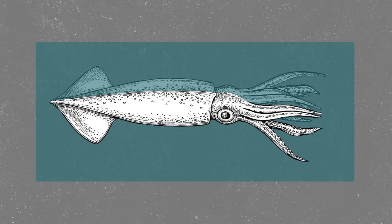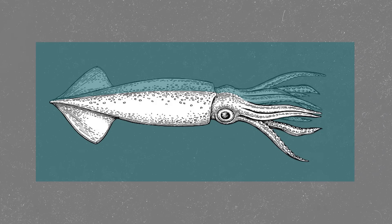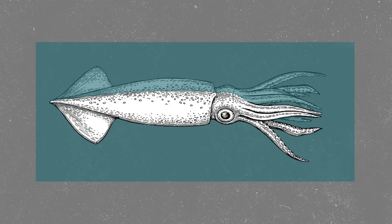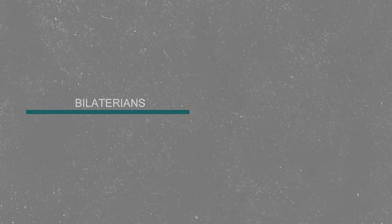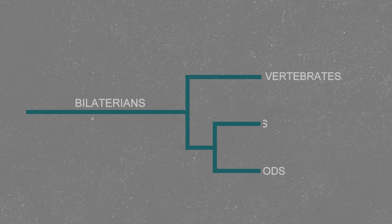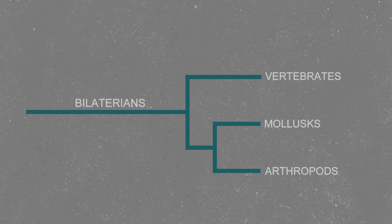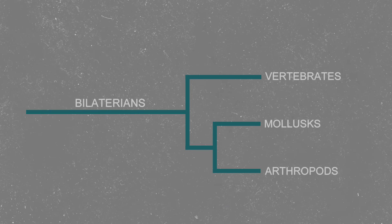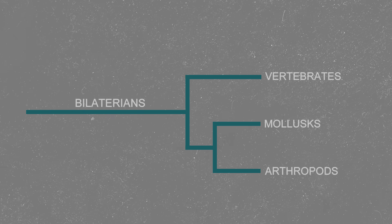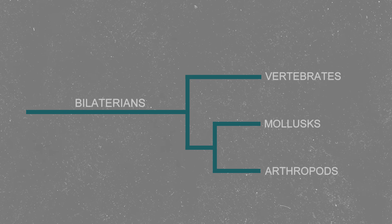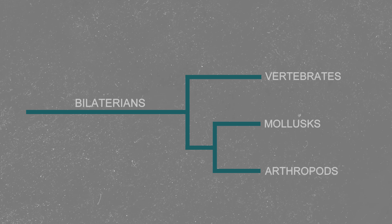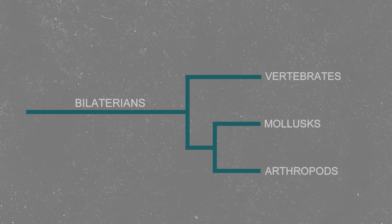They have a left and a right side which are mirror images of each other. This group of animals is one of the largest categorizations used to label a group in the entire animal kingdom, and they are known as the bilatrians, because of their bilateral symmetry.